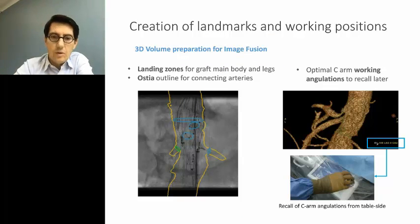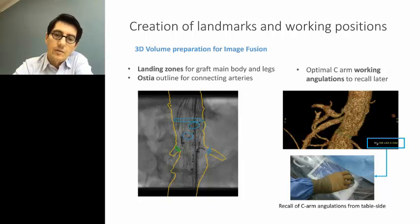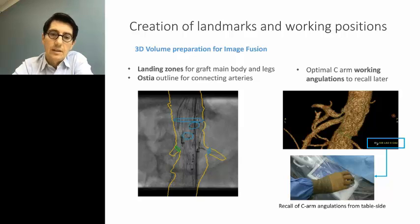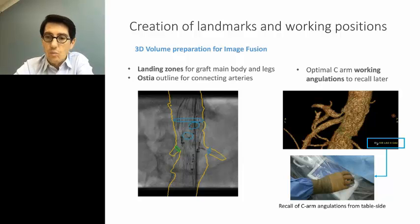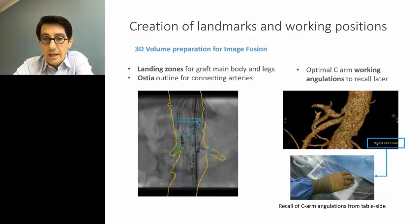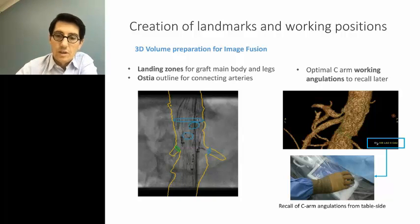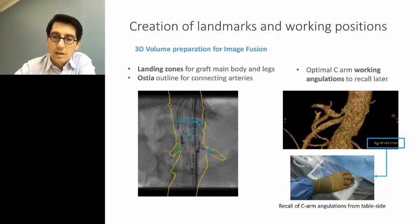Once the endograft is sized, you position the various landmarks. The most proximal blue circle in the aorta represents the top of the stent graft, and you can see the origin of the visceral vessels and renal arteries with the contour of the aortic lumen. We store all the various working positions — you have preset positions such as proximal seal or distal seal, and you can add as many positions as you want that can be recalled from tableside on the day of procedure. By recalling one position, the gantry will automatically move to that best working position, which is very useful when performing the case.